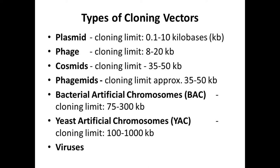Yeast artificial chromosomes have a cloning limit of 100 to 1000 kilobases, and there are also plant and animal viruses used as vectors. Comparing cloning limits: plasmids have the lowest capacity at 0.1–10 kb; phages 8–20 kb; cosmids and phagemids 35–50 kb; bacterial artificial chromosomes 75–300 kb; and yeast artificial chromosomes 100–1000 kilobases.